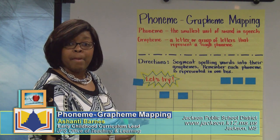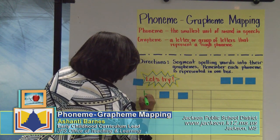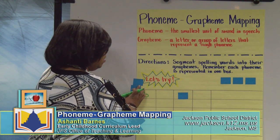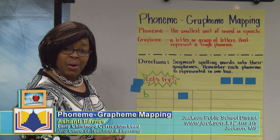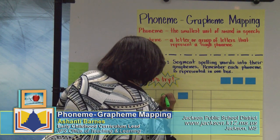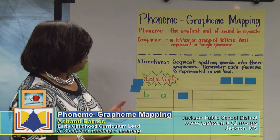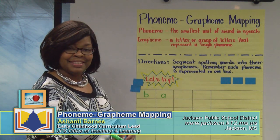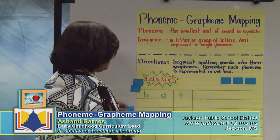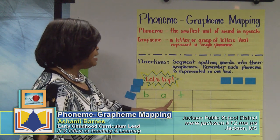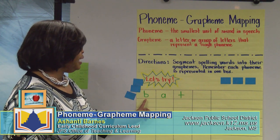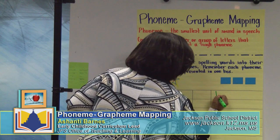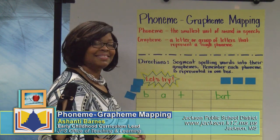Which grapheme represents that phoneme for the b sound? Yes — the letter b. The next sound or phoneme in bat was a. Which grapheme represents that sound? You got it — the letter a. And finally, we have the final phoneme: t. Which grapheme represents the t sound? Absolutely. So we have three phonemes — b, a, t — and the graphemes represented by those phonemes would be b, a, t. This is a CVC word; it's very simple. Now we can spell the word bat.